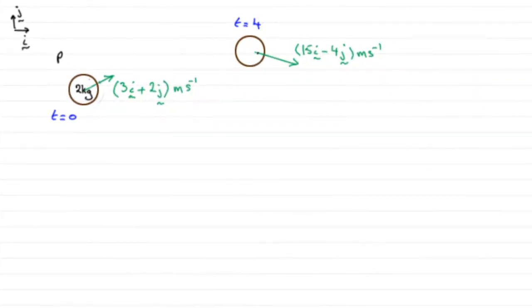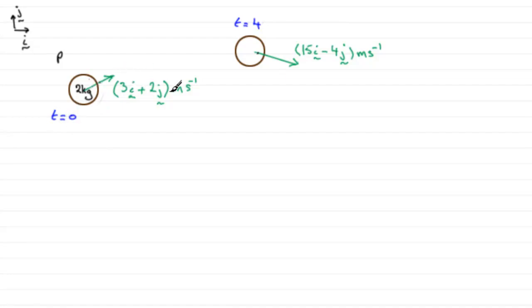For this first part I've sketched out what we're given, but you don't have to do a sketch like this — you can do the problem without one, it's just here to help you visualise. What we've got is a particle P of mass 2 kilograms moving under the action of a constant force F Newtons. We're told that when t equals 0, P has a velocity of 3i plus 2j metres per second, and at time t equals 4 seconds it has a velocity of 15i minus 4j metres per second.